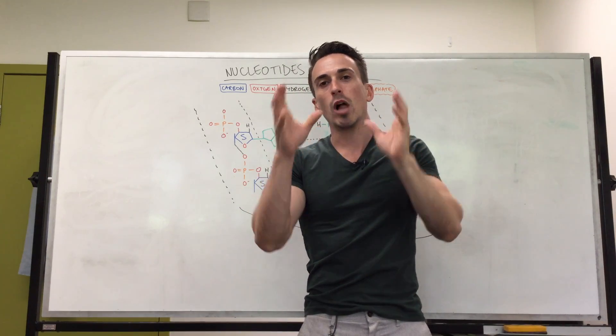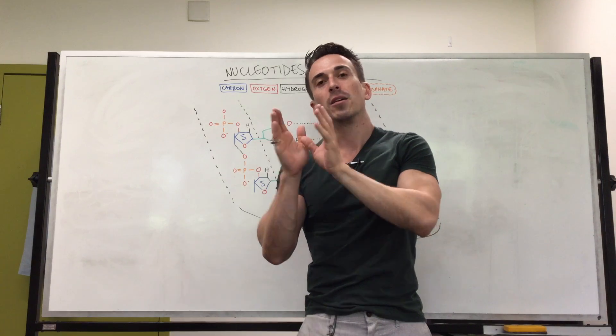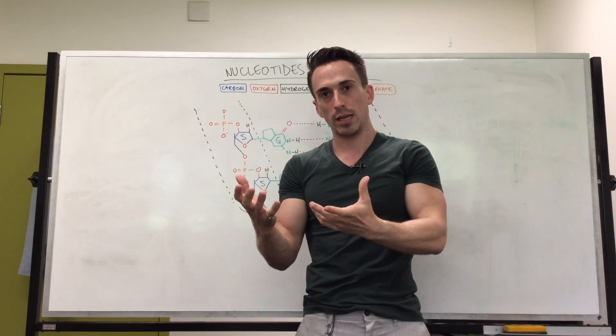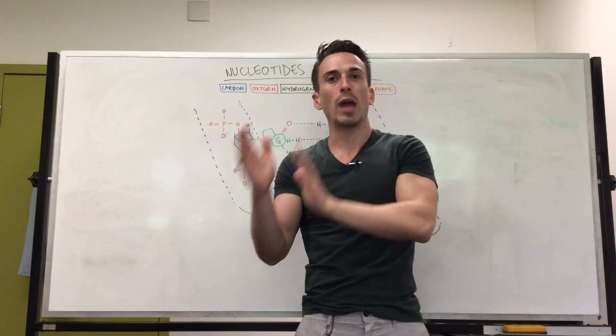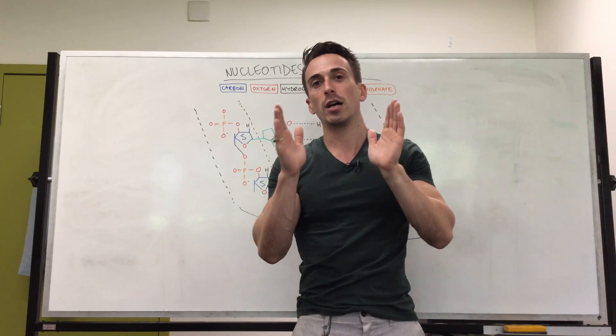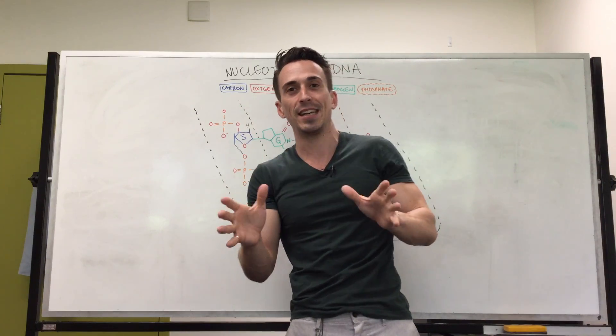These nucleotides will ultimately be read into amino acids and the amino acids will fold into proteins. Now before that happens we need to read the DNA and turn it into something called RNA which will be a future video. So this is the basis of nucleotides and DNA.